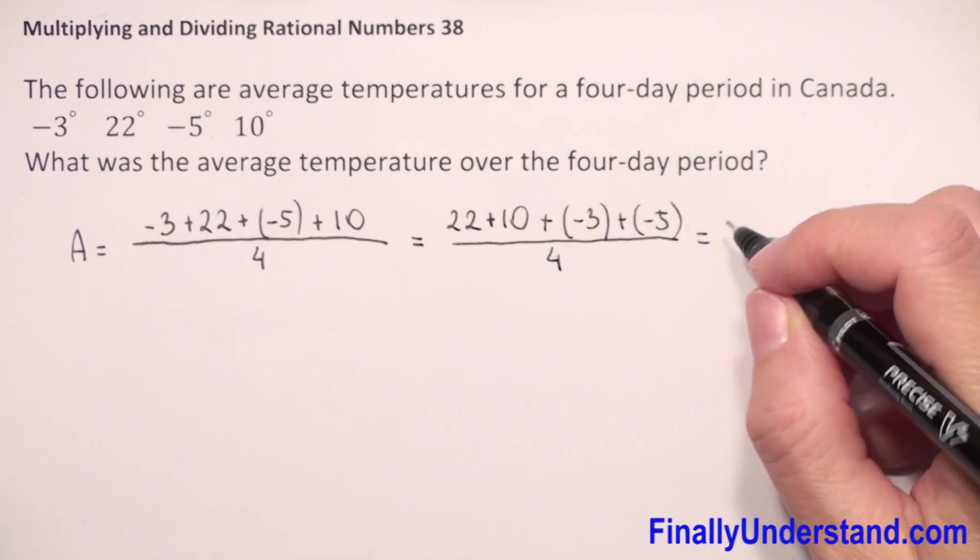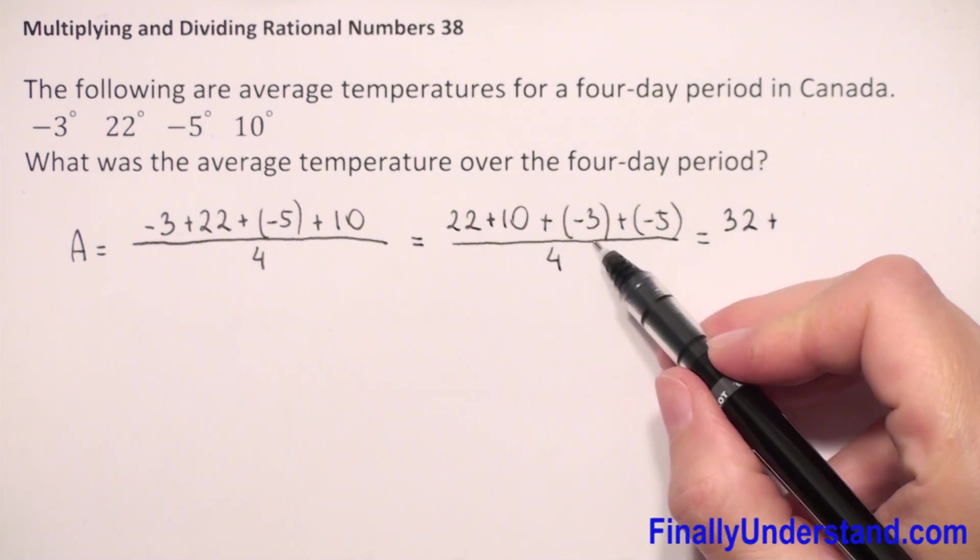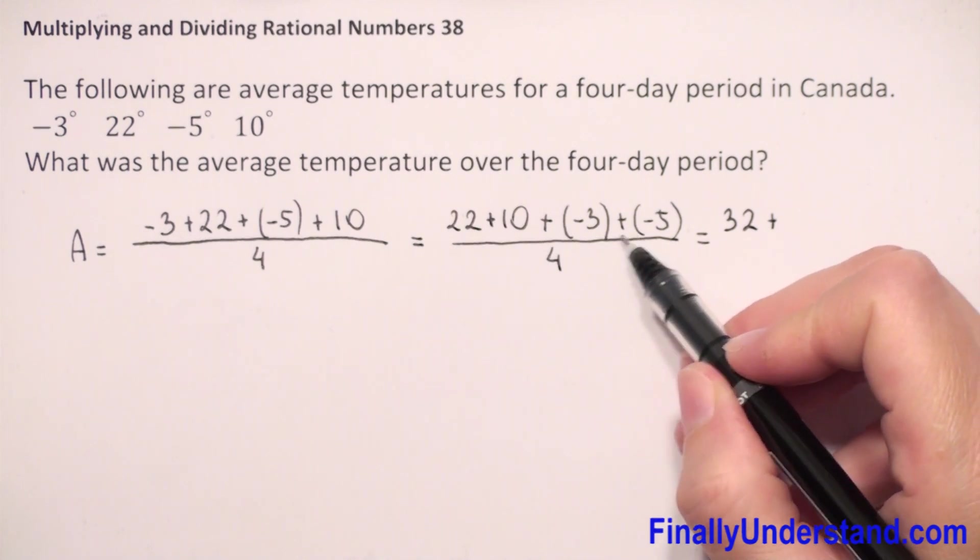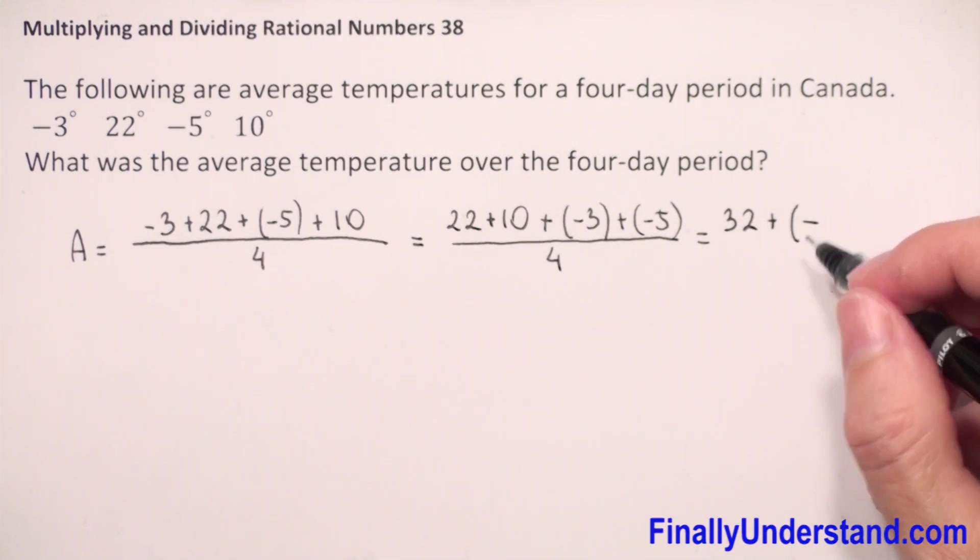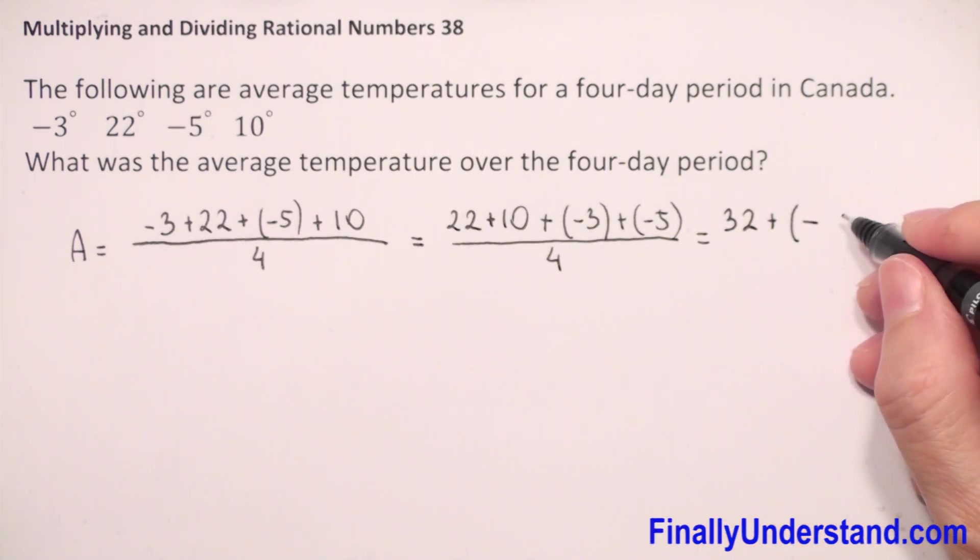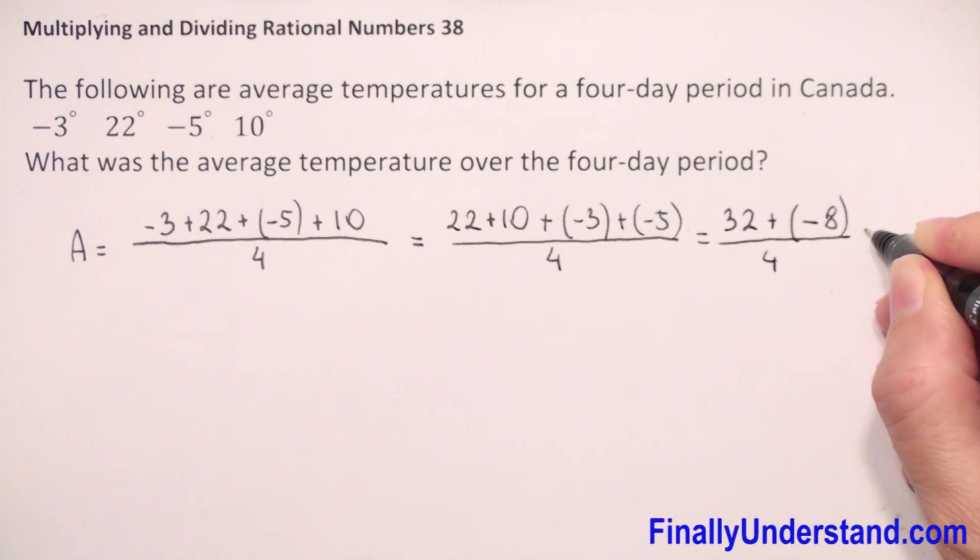So this is equal to: 22 plus 10 is 32, plus we have two negative numbers. When we add two negative numbers, we have to copy the negative sign and we just add 3 plus 5. 3 plus 5 is 8, over 4.